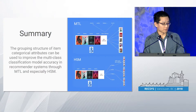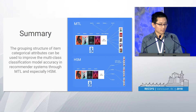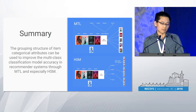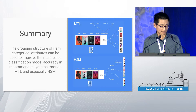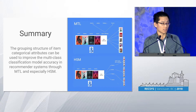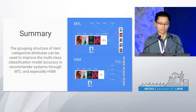To give a summary: the grouping structure of item categorical attributes can be used to improve multi-class classification model accuracy in recommender systems through multitask learning, and especially hierarchical softmax.